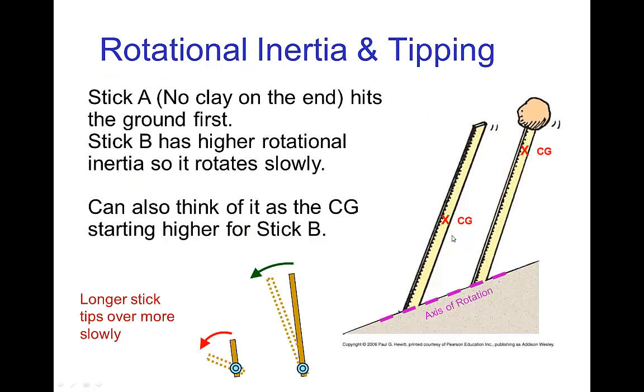There's two ways to think about this. The one with the lump of clay on the end has a large amount of mass far from the axis of rotation. The axis of rotation for tipping motion would be the ground. Another way to think of it is that if we locate the center of gravity, the center of gravity of the first stick is just in the middle of the stick.